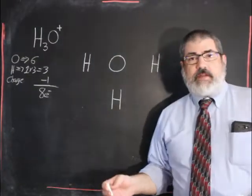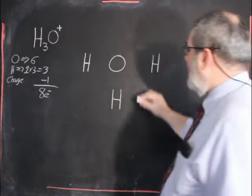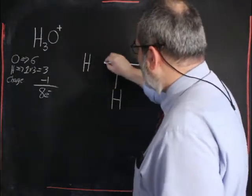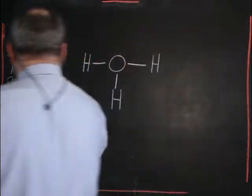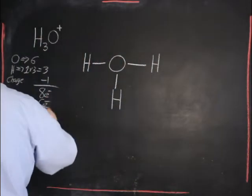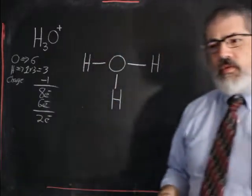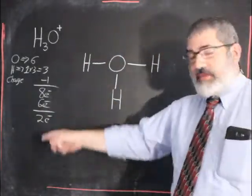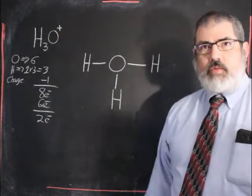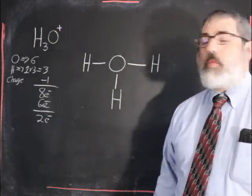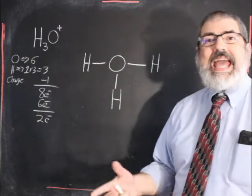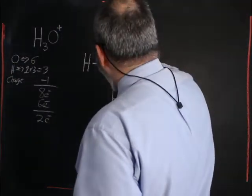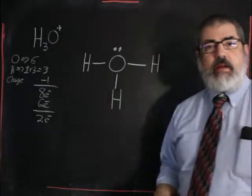For connectivity we need single bonds between the oxygen and each hydrogen. Two, four, six electrons. When you've drawn your single bonds and you have electrons left over, that means you either need lone pairs or double bonds. Hydrogen cannot form double bonds.